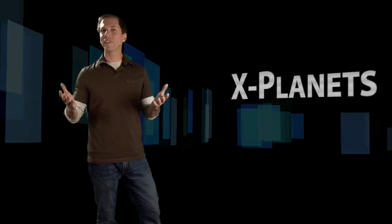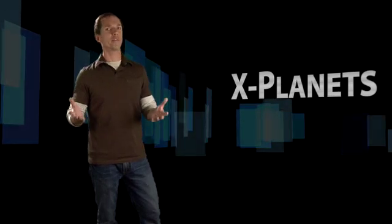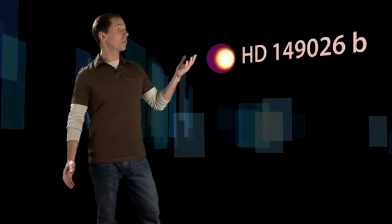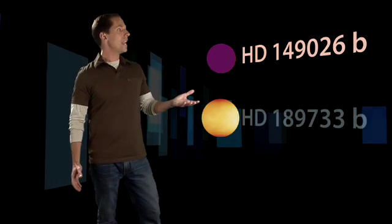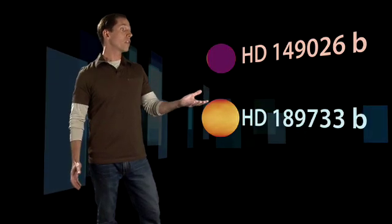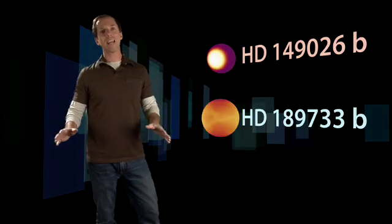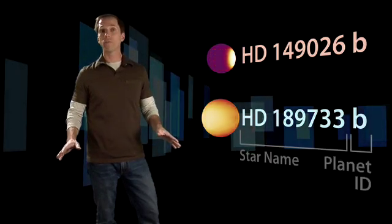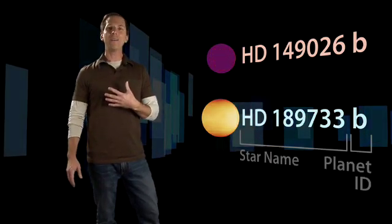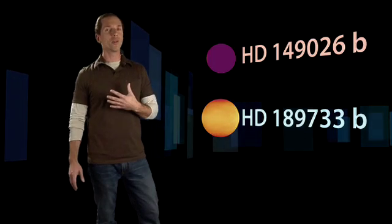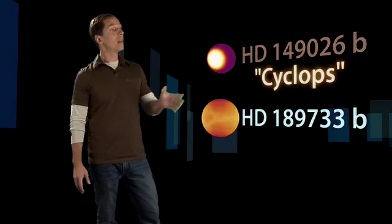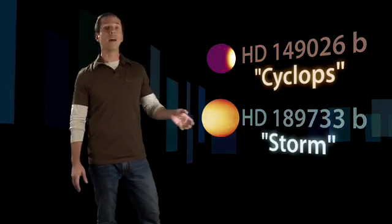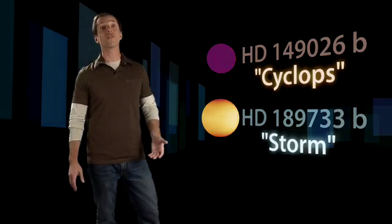Instead of exoplanets, let's call these X-Planets, because they have the most extreme conditions we've ever seen. Their official names, HD 149026b and HD 189733b, are based on the catalog numbers of their host stars. Personally, I'm going to call them something unofficial but easier to remember: Cyclops and Storm, the hottest and windiest known planets.